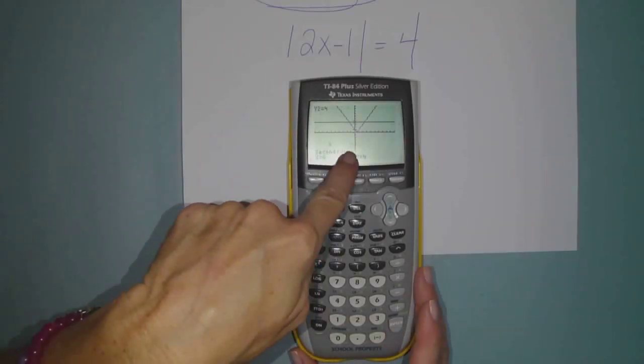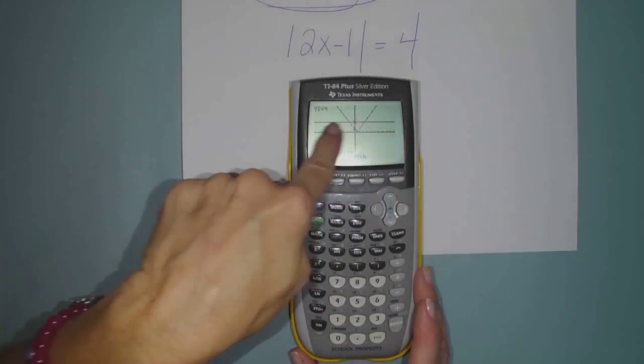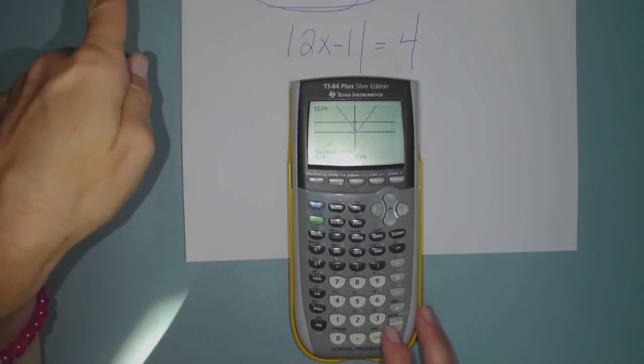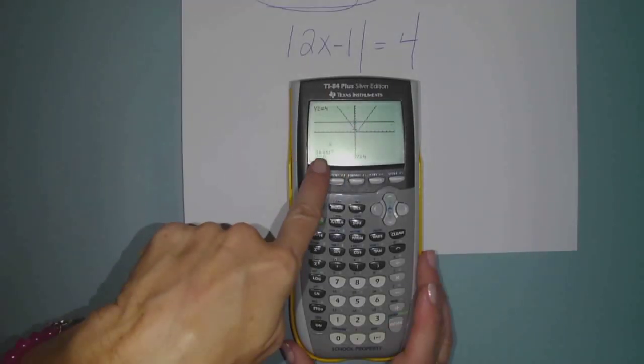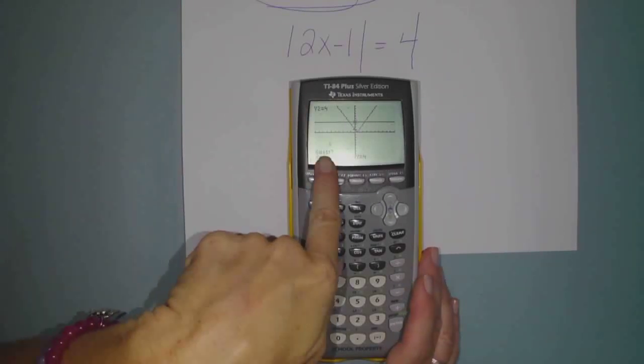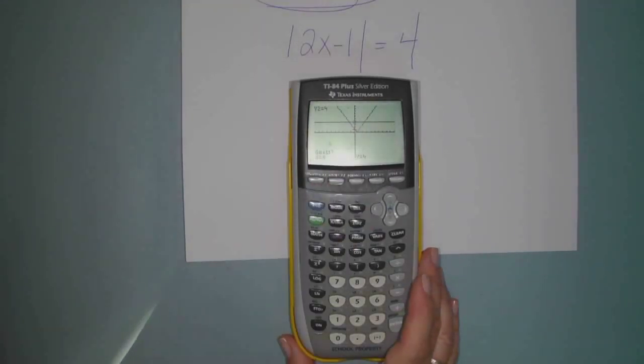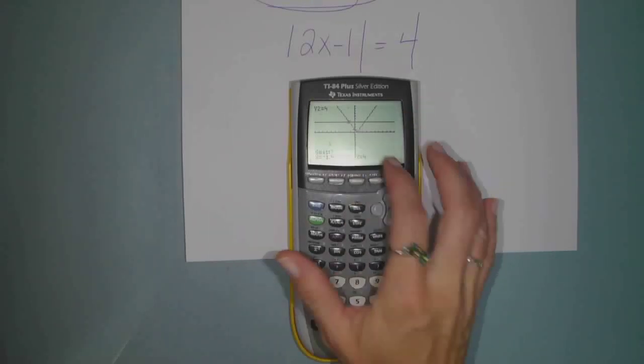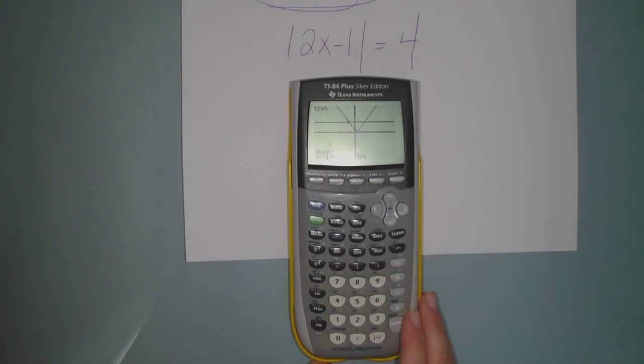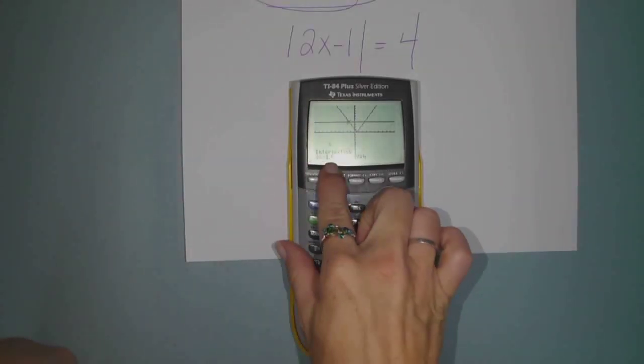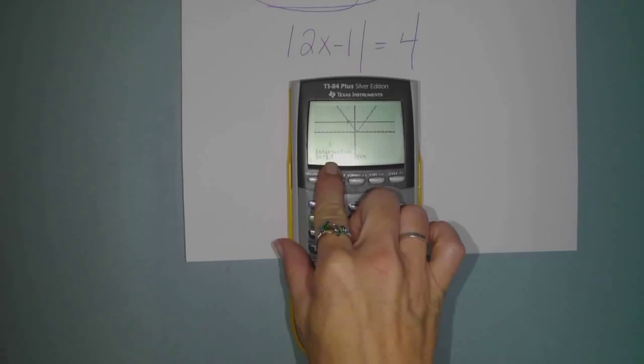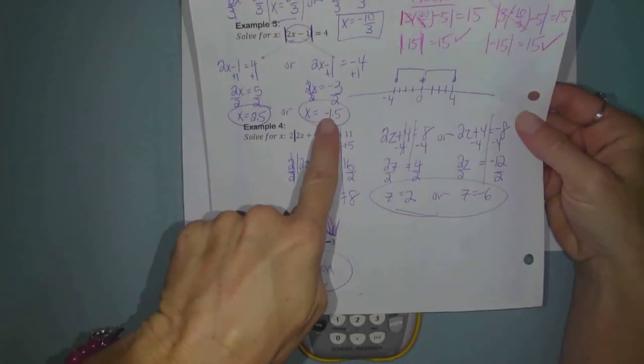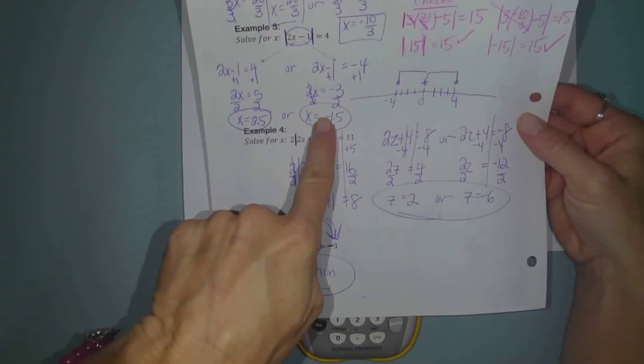Then it says second curve. See how the cursor jumped up to the horizontal line at y equals 4. So just hit enter. Yep. Then it says guess. So you are supposed to guess where the intersection occurs. So you see your cursor blinking there. I'm going to use my left arrow because I think they intersect over here. So you want to lay that cursor as close to the intersection point as you can and hit enter. Now check it out. X equals negative 1.5. What did we get? Negative 1.5. Okay.